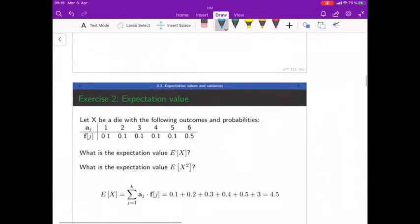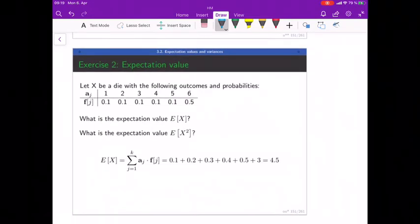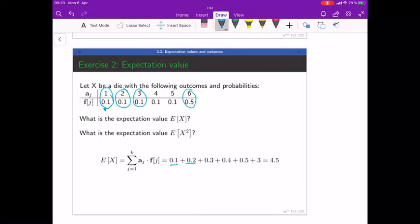All finished? Perfect! E[X], just as we've done it before. I take aj times the probability, so basically in this table I multiply those ones with each other all the way down. The first one is 0.1, then two times 0.1 is 0.2, and so on. Last couple: six times 0.5 is three. Add up to 4.5, so 4.5 is our expectation value. In a fair die it would be 3.5, so we see it's considerably skewed.